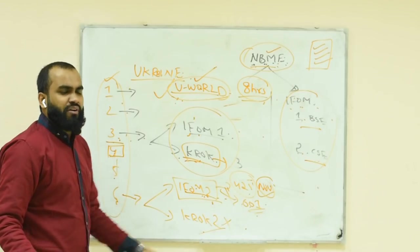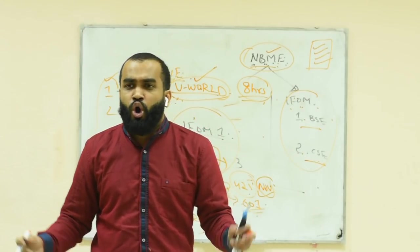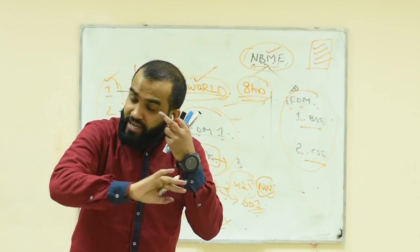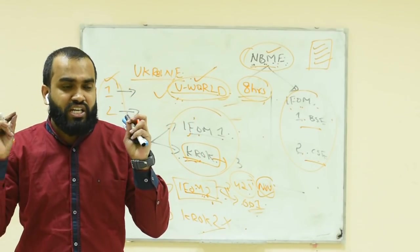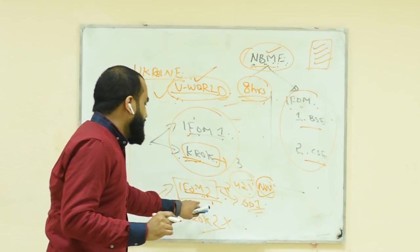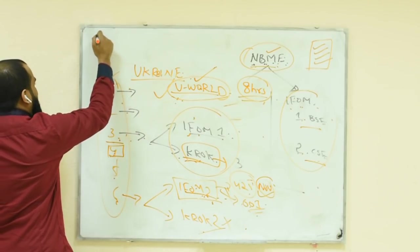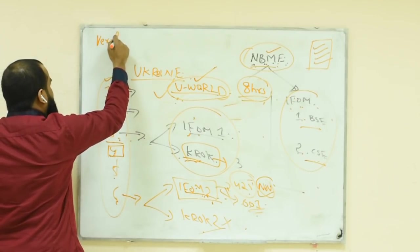It means after completing UWorld 1 and UWorld 2, you can clear any exam in the world - can be Plab, Australian exam, any other thing. One of the other biggest advantages here is if you are clearing IFOM here, IFOM 2 from Ukraine, you are getting the verification. That is verification means there is a verification called ECFMG verification - that is Educational Commission for Foreign Medical Graduates.